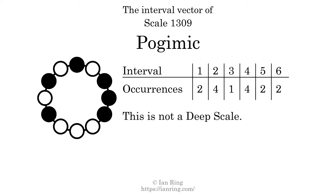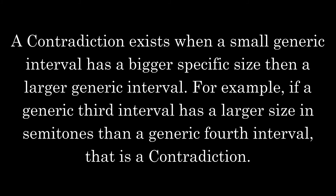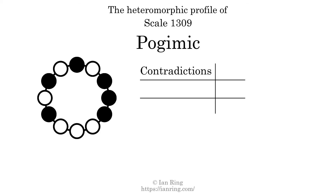Each interval does not appear in this scale a unique number of times, so this is not a deep scale. Heteromorphisms are comparisons between every interval in a set. They can be classified as contradictions, ambiguities, and differences. A contradiction exists when a small generic interval has a bigger specific size than a larger generic interval. The number of contradictions in this scale is 10.